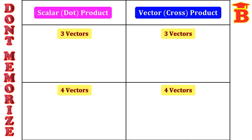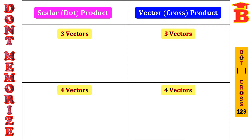Here in the first column we have scalar or dot product and in the second column we have vector or cross product. For dot product we have to take the determinant, and for cross product we use the shortcut technique 1, 2, 3.